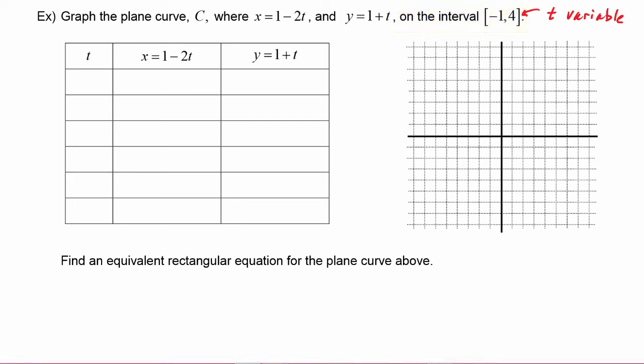So when we go to plug in values for t, they will go from negative 1 up to 4. We are picking integer values for t just because they're the easiest ones to plug in. If for some reason we couldn't figure out the graph from plotting these points, then we would just try plugging in some more until we could see what the graph was.